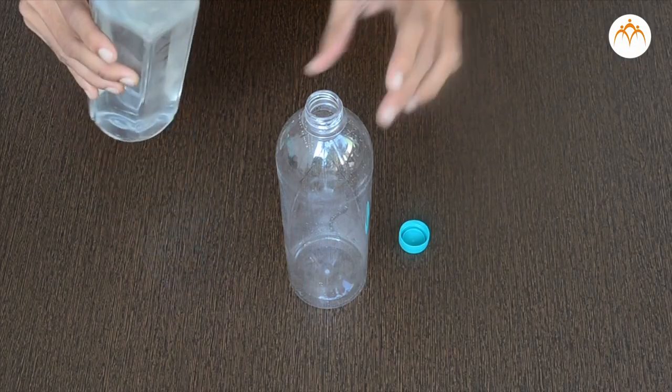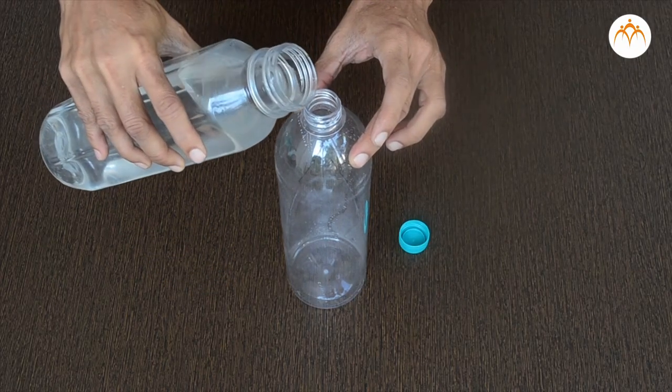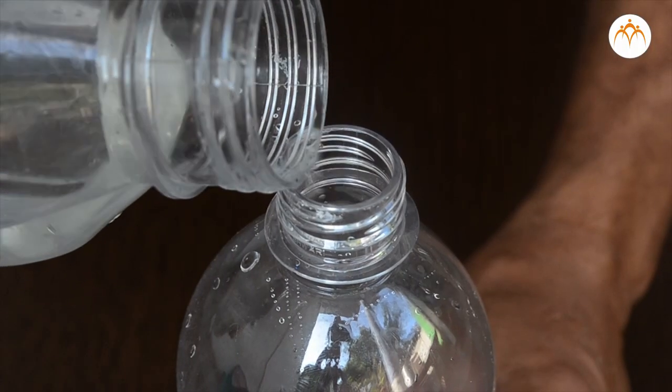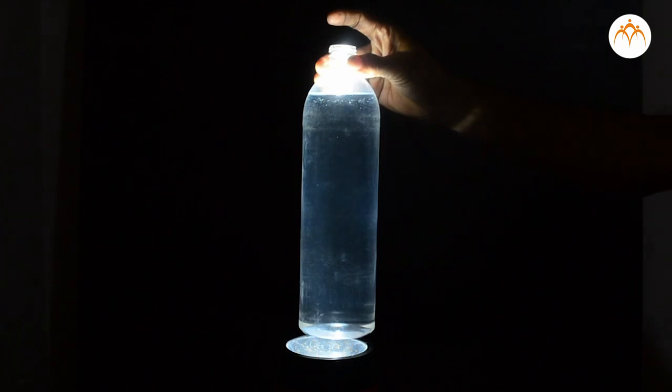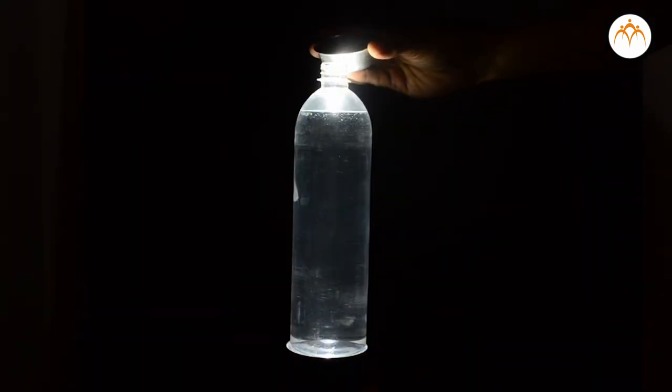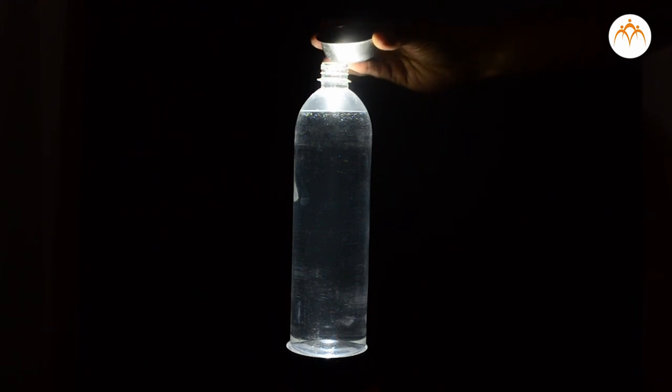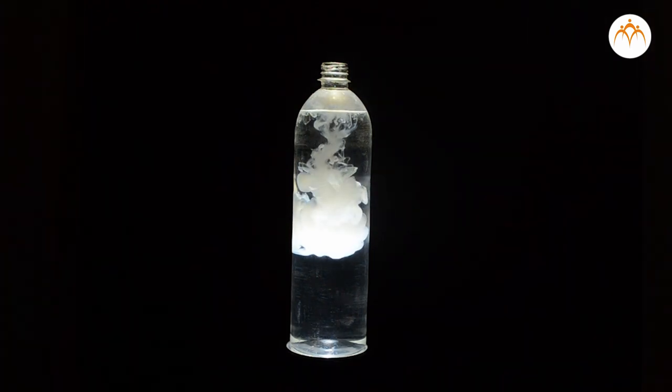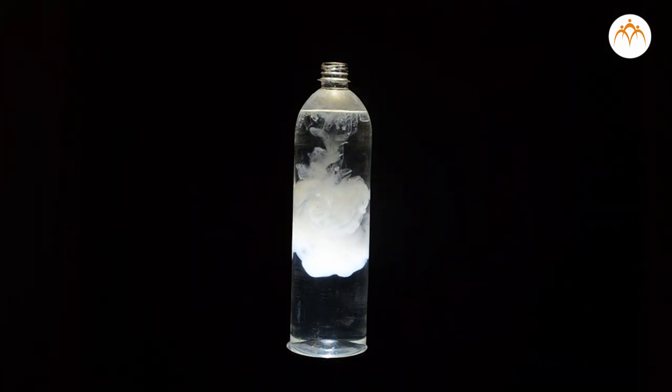We will do another activity to see this effect. I will fill this plastic water bottle with water. Let us keep this bottle on the torch. You can see the white light from the torch. When I put some milk in the water, it becomes slightly turbid. Small particles of milk are similar to the ones in the atmosphere. You can see the blue tinge in some areas of the bottle.